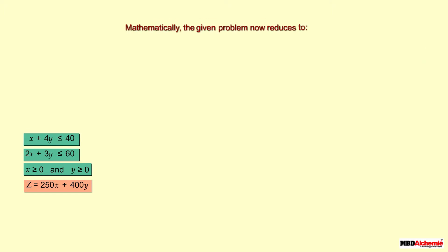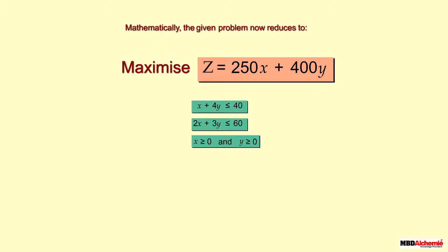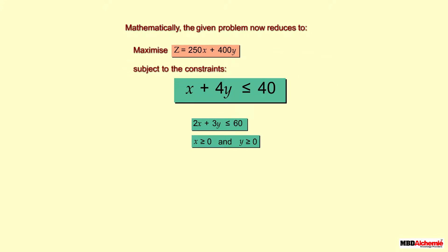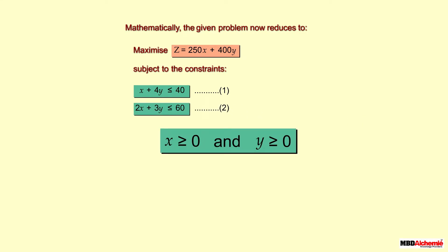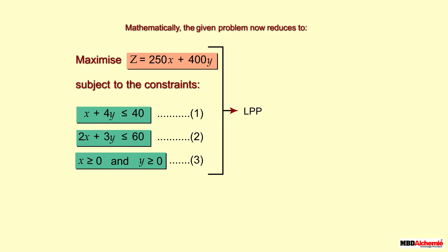Mathematically, the problem reduces to: maximize Z = 250x + 400y, subject to the constraints: (1) x + 4y ≤ 40, (2) 2x + 3y ≤ 60, and (3) x ≥ 0, y ≥ 0. The given information has now been formulated as an LPP.